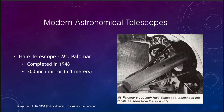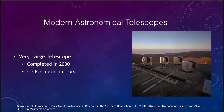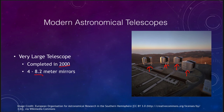The Very Large Telescope, completed in 2000, has a set of four eight-meter mirrors, significantly larger than the Hale. Each mirror sits in a separate dome, and the telescope is located in the southern hemisphere in Chile. The four telescopes can be used together or individually to observe astronomical objects. Because fainter objects we can see depend on telescope size, the Very Large Telescope can see fainter objects than the Hale.